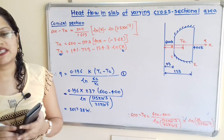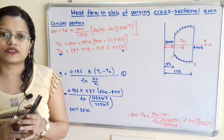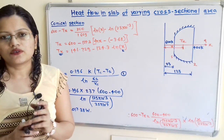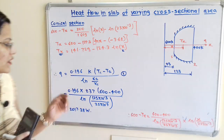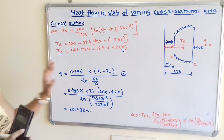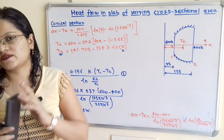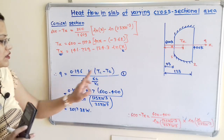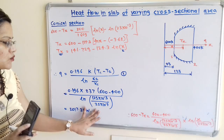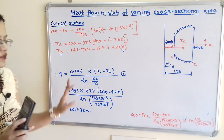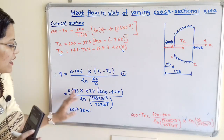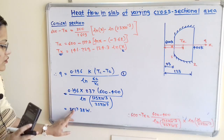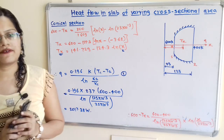For the second part, we find the rate of heat flow using equation 1: Q = 0.196K(T1 − T2) / ln(X2/X1). All values are known — T1 = 600 K, T2 = 400 K, X1 = 25 mm, X2 = 125 mm, K = 237 W/m·K. Substituting all values gives Q = 2017.38 Watts.